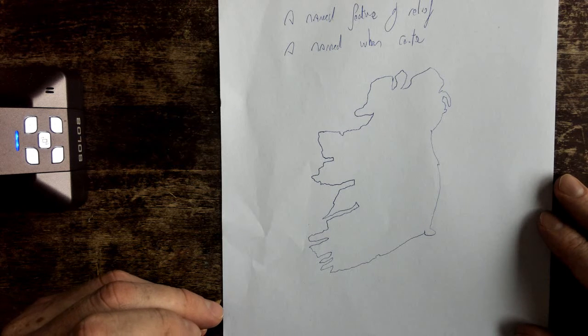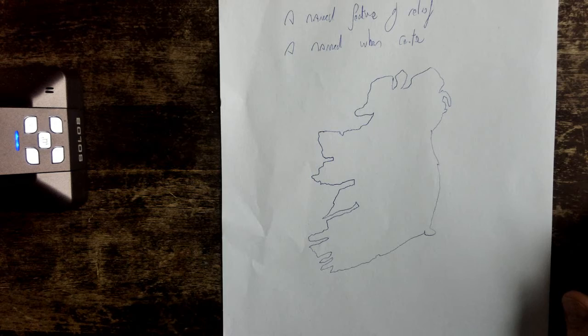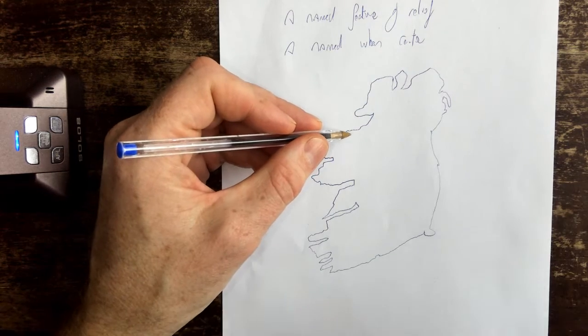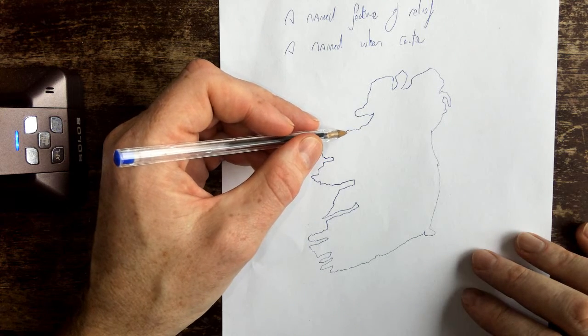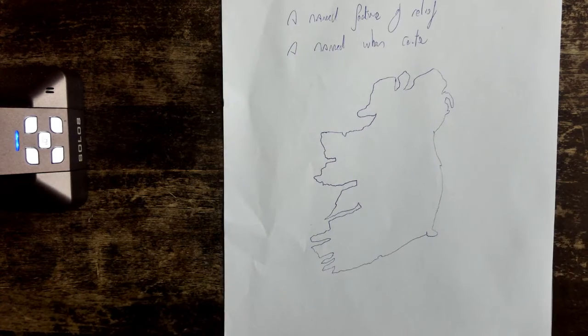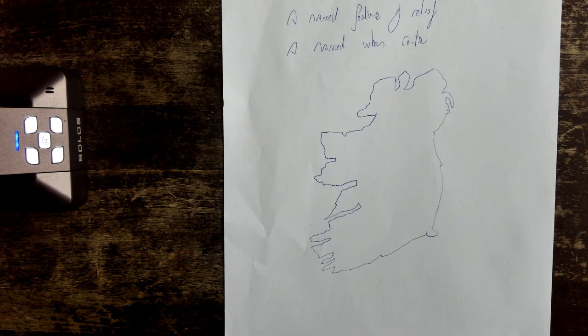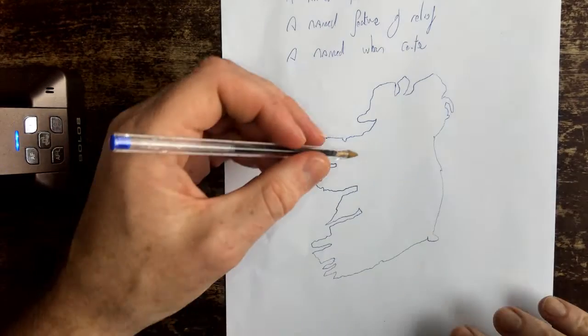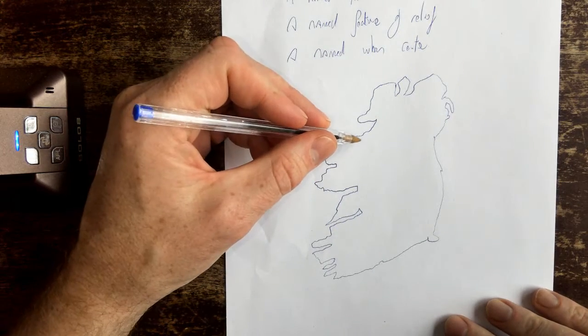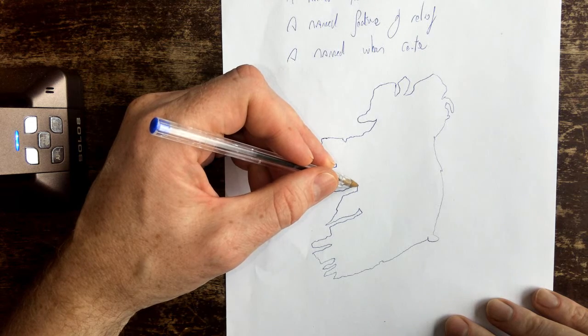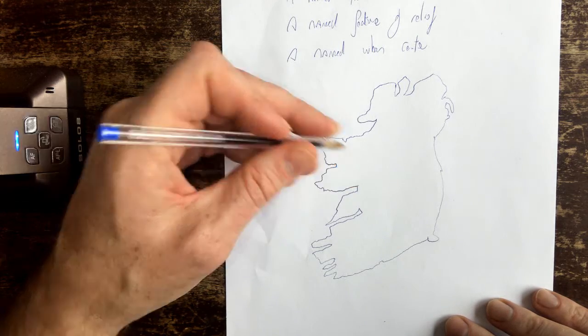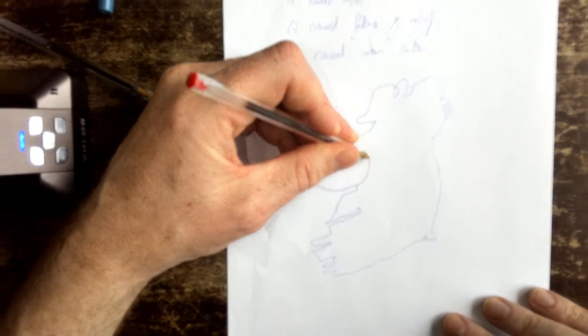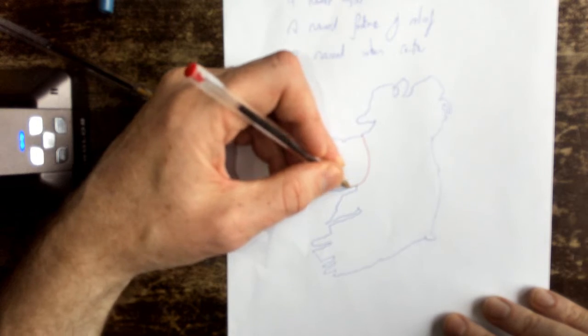So I'm going to go for the Western region, which for me includes Mayo, Roscommon, and Galway. So just to confirm there, we're going to include Mayo, Roscommon, Galway and Sligo in the Western region. So the outline of the region, we'll go with this.